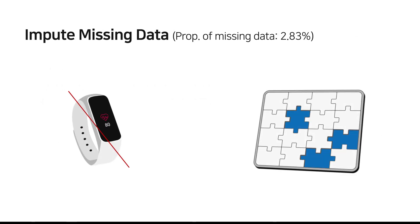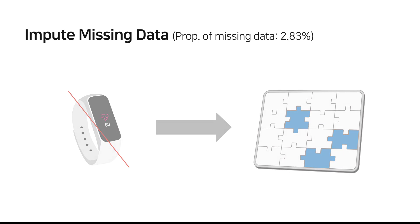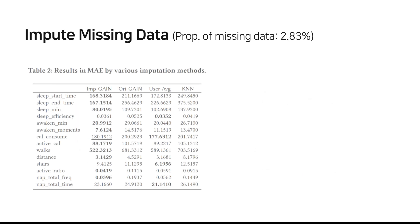There were some missing data due to participants charging devices or forgetting to put on the devices. We filled in the missing data with a deep learning model called improved GAIN. The ratio of average improvement of improved GAIN is 31%.